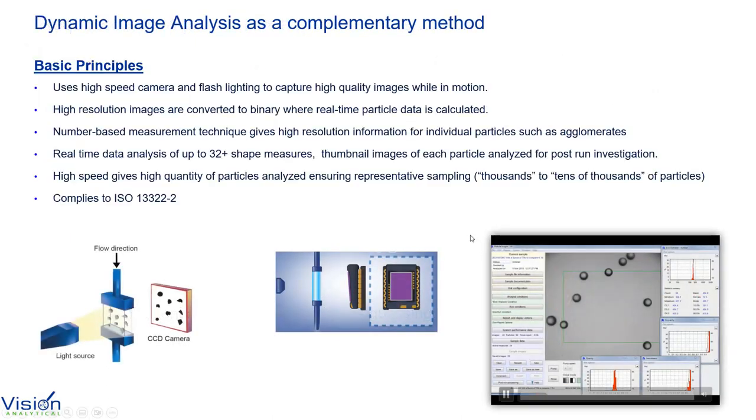The new tool that we're going to be talking about is dynamic image analysis. It's a very complementary method in industry. It uses a camera, a high-speed camera, and a flash to capture these particles in motion as they're suspended in fluid. The high-resolution images are converted to binary images and that's where the real-time particle data and statistics are calculated. It's a number-based image and a direct measurement so we get very high resolution information for the individual particles such as these agglomerates that we're actually looking for. And again, everything is in real time. All the shape measures are calculated in real time and thumbnail images are saved for each particle that's analyzed.